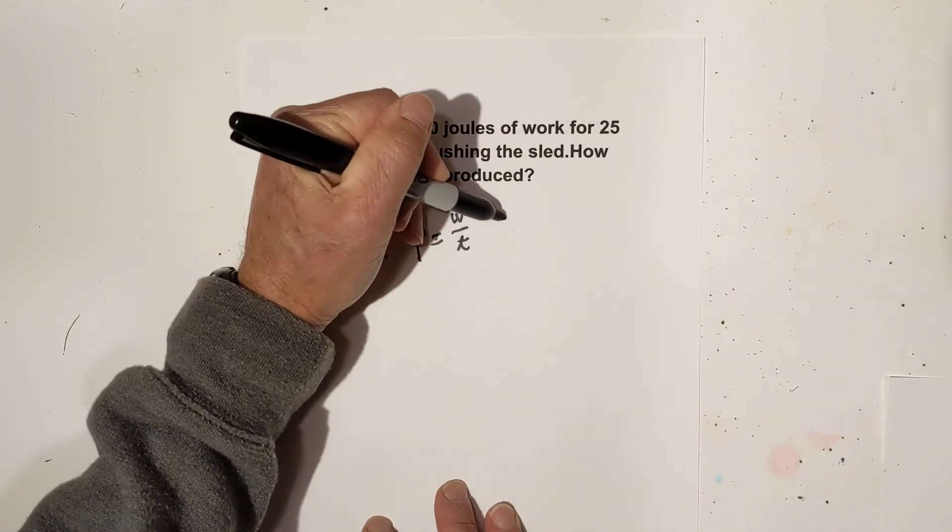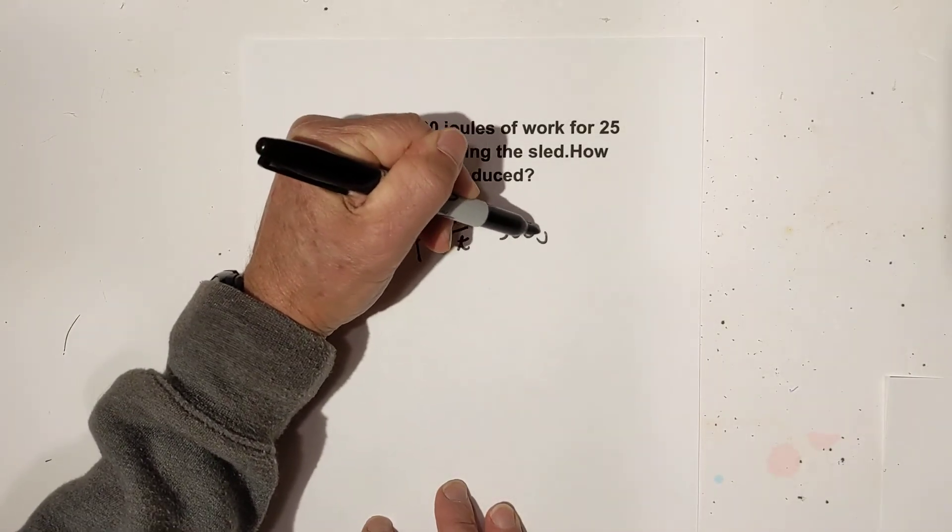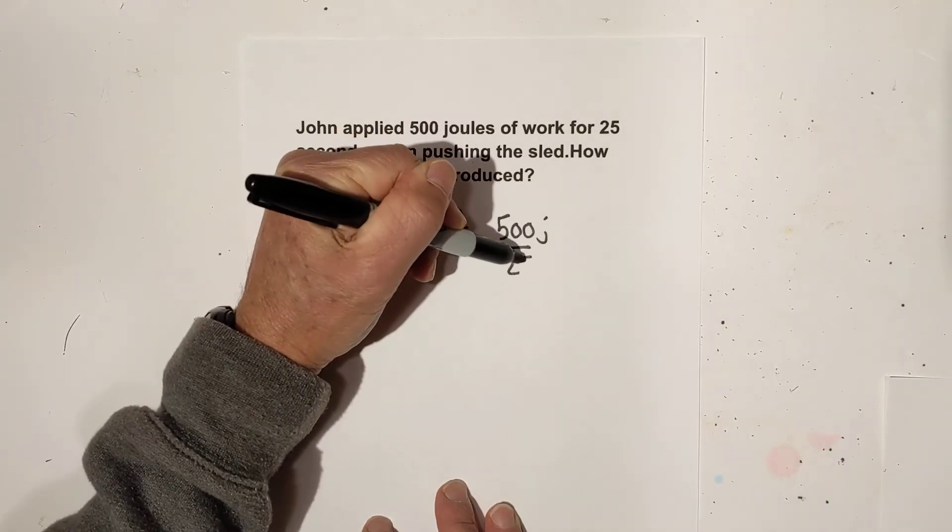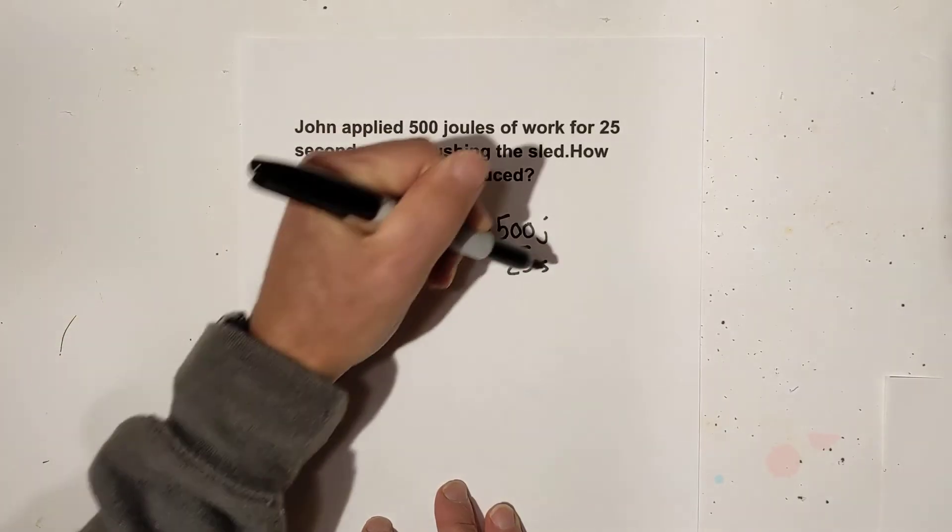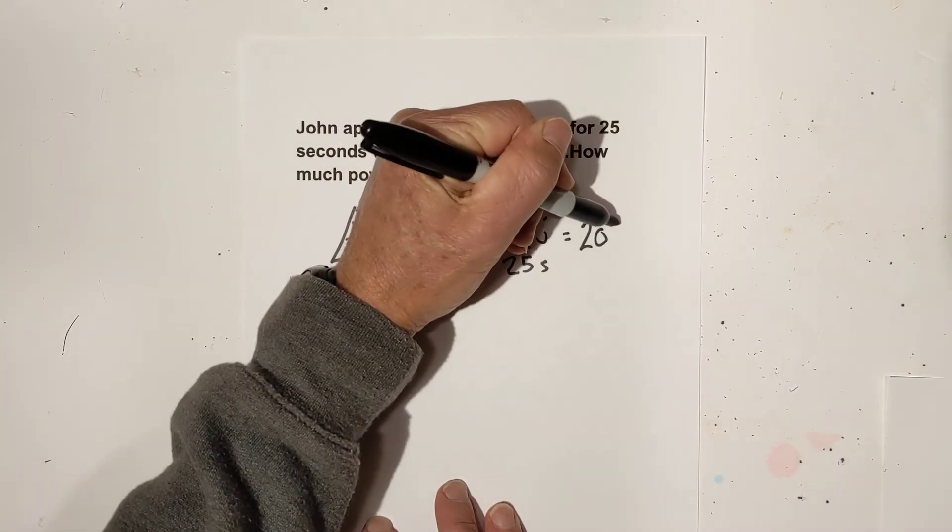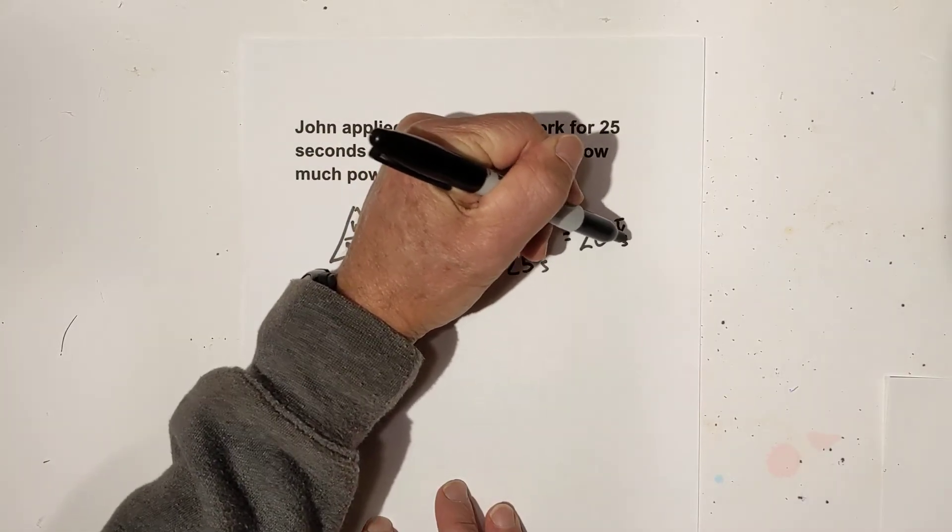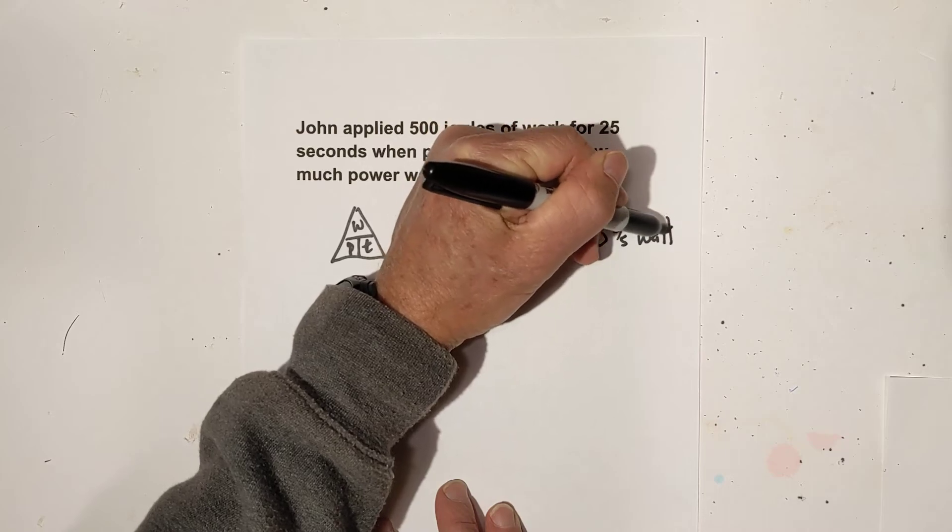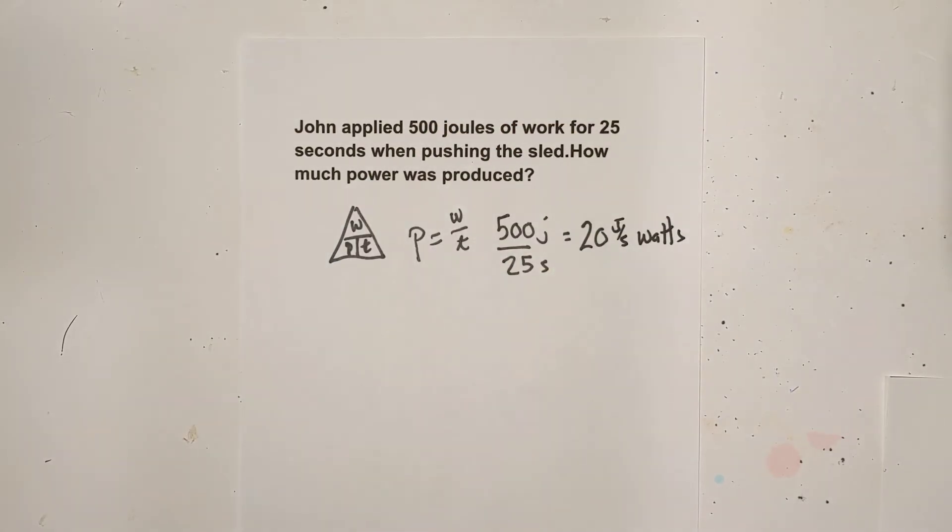Power is equal to work over time. So we have 500 joules of work and that was for 25 seconds. When you divide 500 by 25, that gives you 20. Remember, we have joules per second, which is a watt. So it is 20 watts.